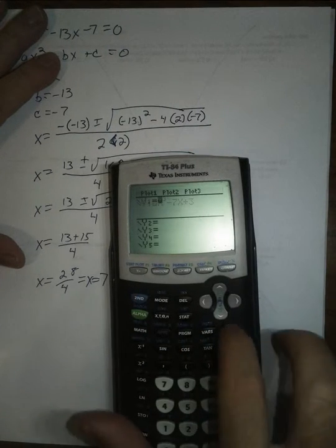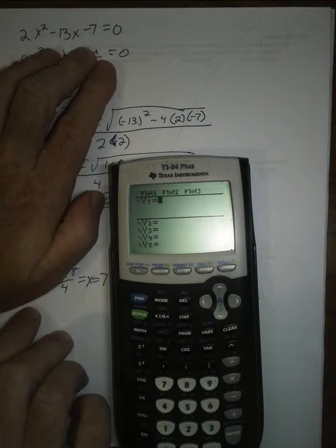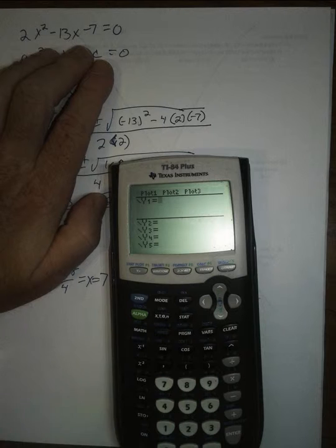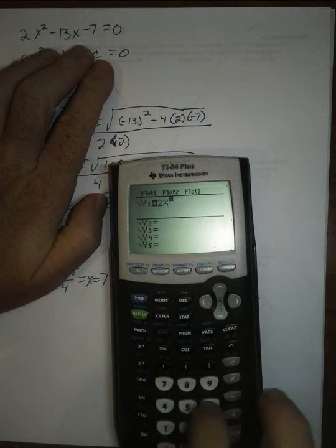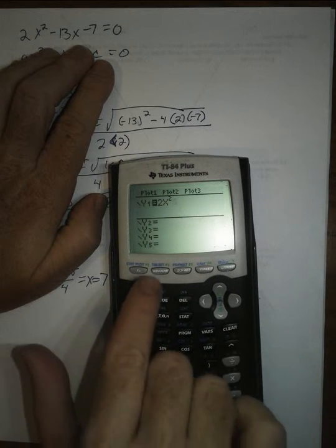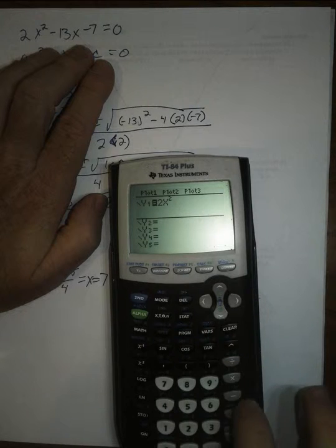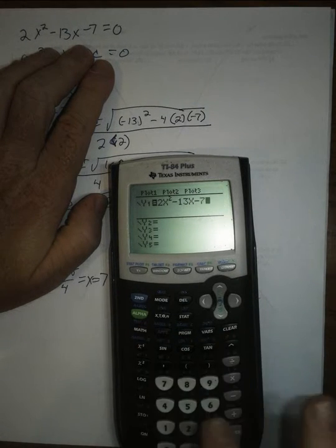y equals, I'm going to clear out that old equation. I'm going to type in the quadratic equation here, and that's 2x to the 2. I forgot to hit, I could have hit the x squared button, but I'm just used to doing the exponent. x squared minus 13x minus 7.